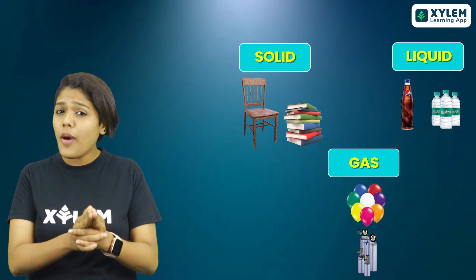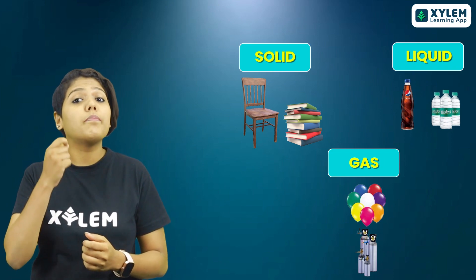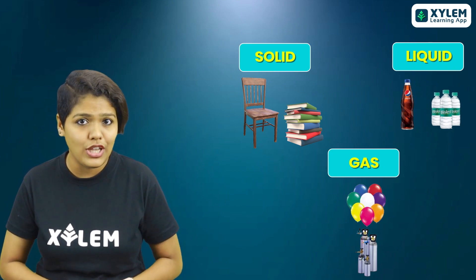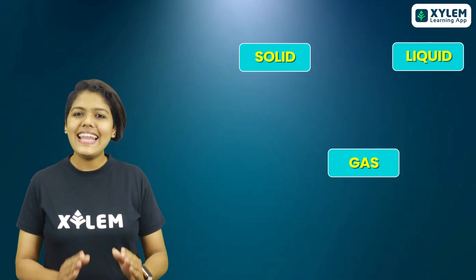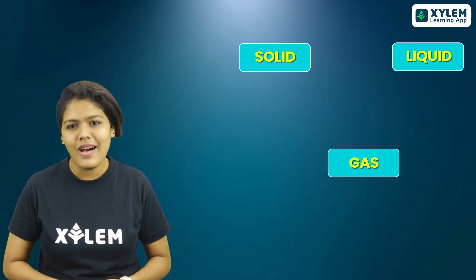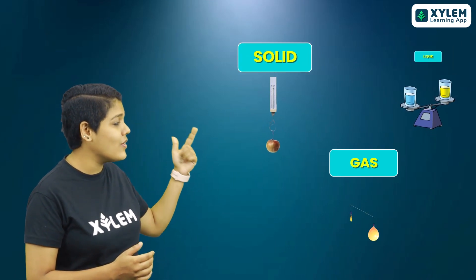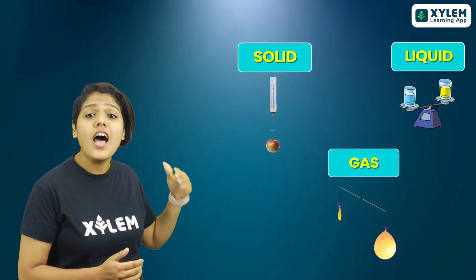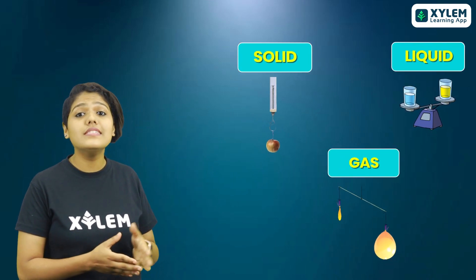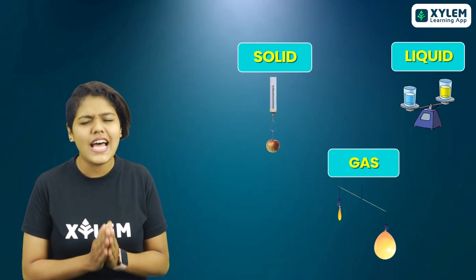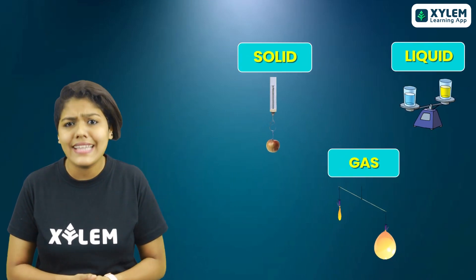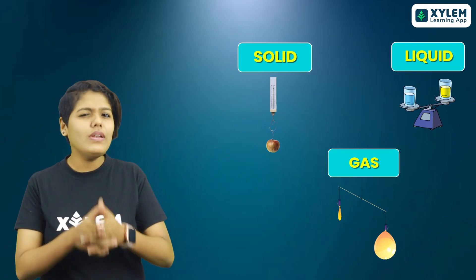Now let's see the properties at the particle level. Let's see the mass. As we all know, solids, liquids and gases all have a definite mass. There is no doubt in that case.